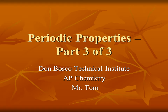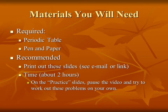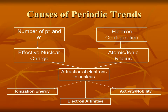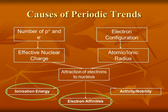Here's the third and final part for the Periodic Properties presentation for AP Chemistry. You'll need all the same materials you needed for the previous two parts. Same basic diagram as you've seen before, except this time we are focusing on ionization energies and electron affinities.